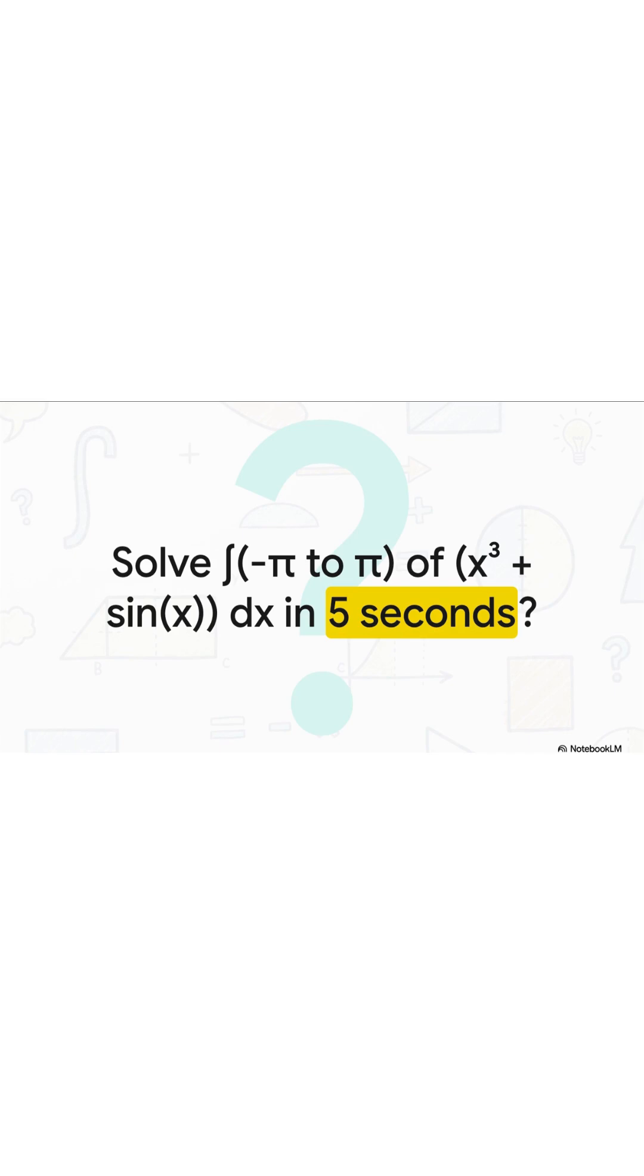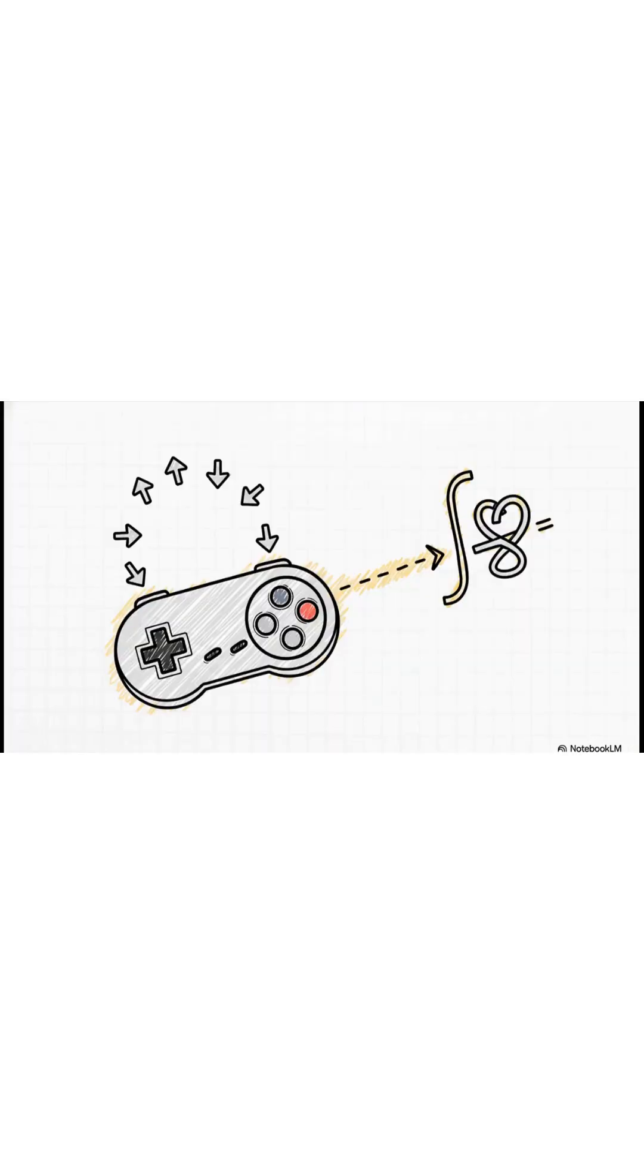Now if your brain immediately started trying to remember anti-derivatives and plugging in pi, you were working way too hard. The answer is zero, and you can figure that out almost instantly. So how on earth is that possible? It's not impossible, not if you know the cheat codes. And that's exactly what we're diving into today.